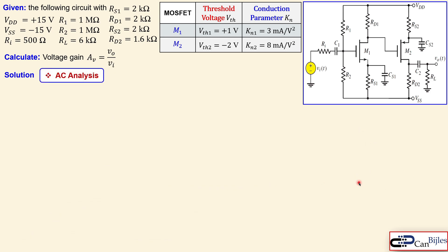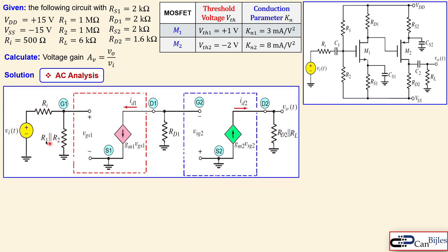We now move to the AC analysis using the small signal model. The N-channel model is shown in red and the P-channel in blue, with terminal labels G1, S1, D1 for M1 and G2, S2, D2 for M2. For AC analysis all capacitors are perfect shorts: RS1 is shorted out by CS1, RS2 is shorted out by CS2, all DC voltage sources are shorted, and RD2 appears in parallel with load RL.